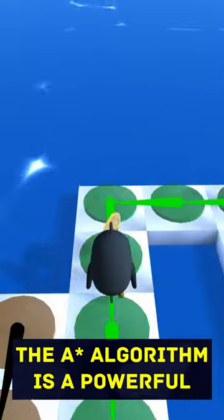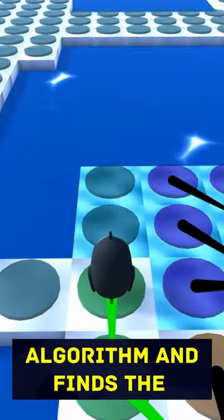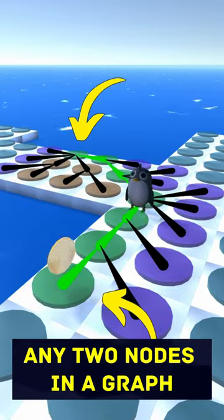The ASTAR algorithm is a powerful pathfinding technique that was built upon Dijkstra's algorithm and finds the lowest cost path between any two nodes in a graph.